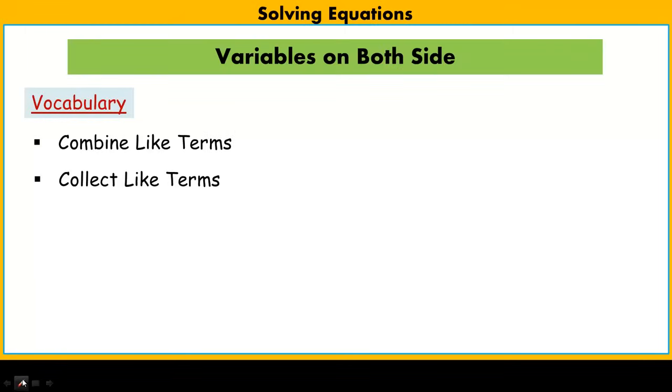Hey guys, today's lesson will be on solving equations where there are now variables on both sides of the equation. I want to clarify vocabulary: when we talk about combining like terms and collecting like terms, they are very similar. Usually when we talk about combining like terms, we talk about one side of an equation. Collecting means collecting everything on one side or the other.